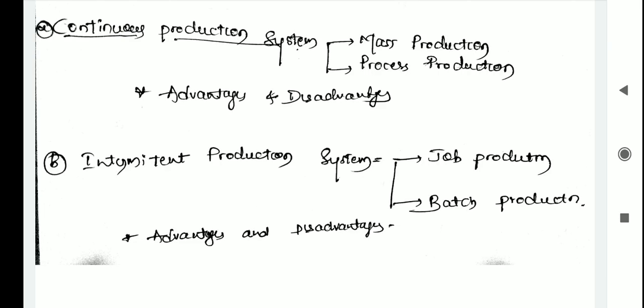Hello students, in this video I'm discussing the classification of a production system. As we already know, the production system is a part of an organization which produces its products. Production is a basic activity of all organizations, and all other activities revolve under production activity. The output of the production system is the creation of goods and services which satisfy the needs of the customer.